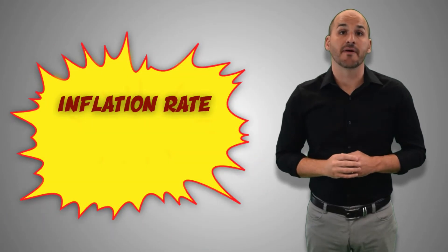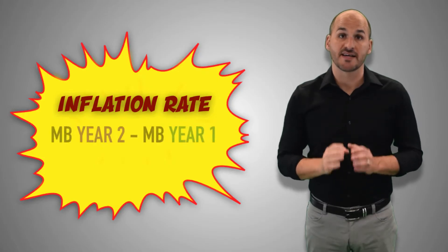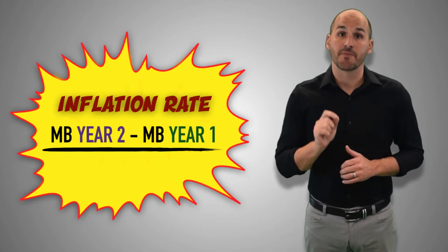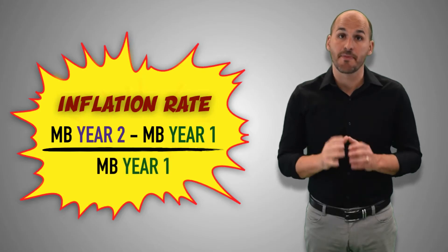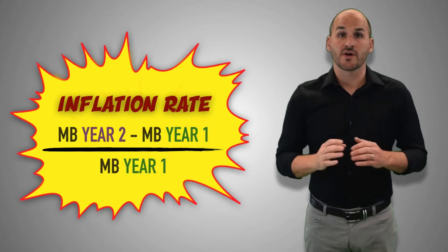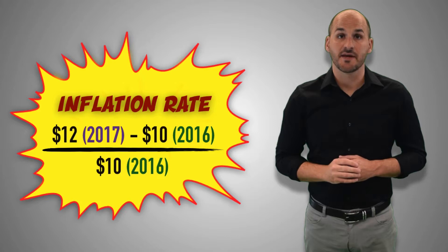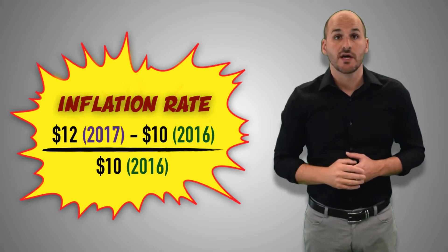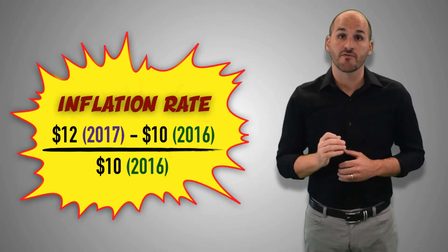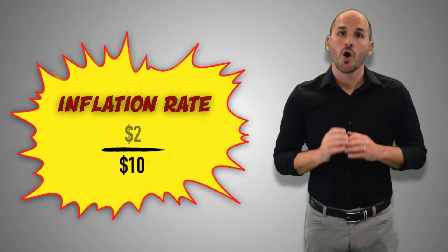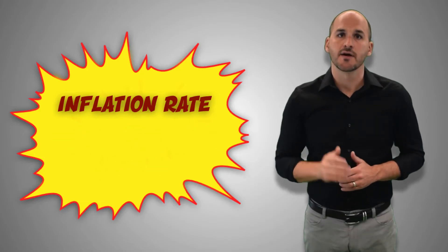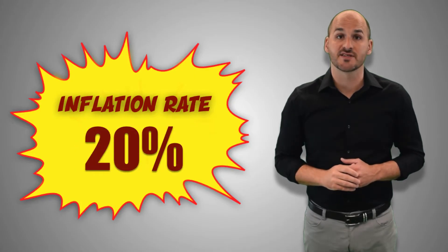The inflation rate is calculated by finding the difference in the same market basket sample between two years, and then dividing it by the sum value of the market basket in the base year of comparison. For example, if the 2016 market basket value in the United States is $10, and the same market basket totals $12 in 2017, we can conclude that prices increased in the United States by 20% between 2016 and 2017. The inflation rate illustrates the percentage increase or decrease in prices of goods and services in the aggregate economy in a given year.